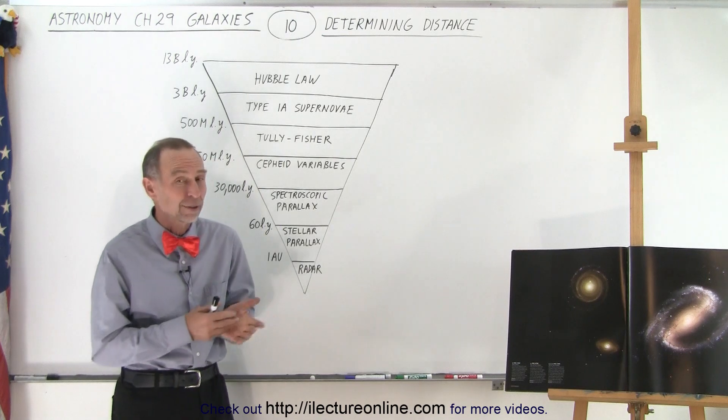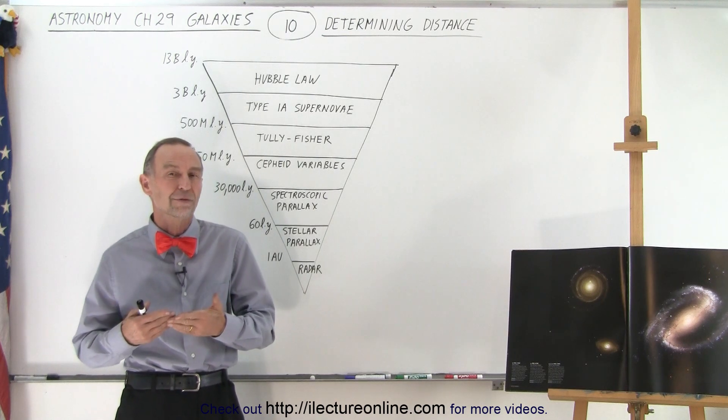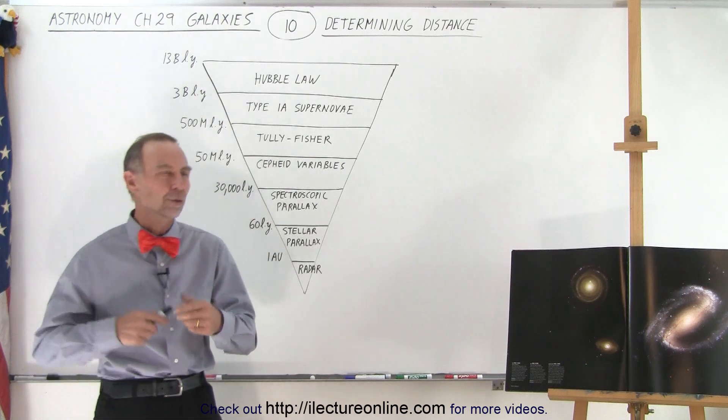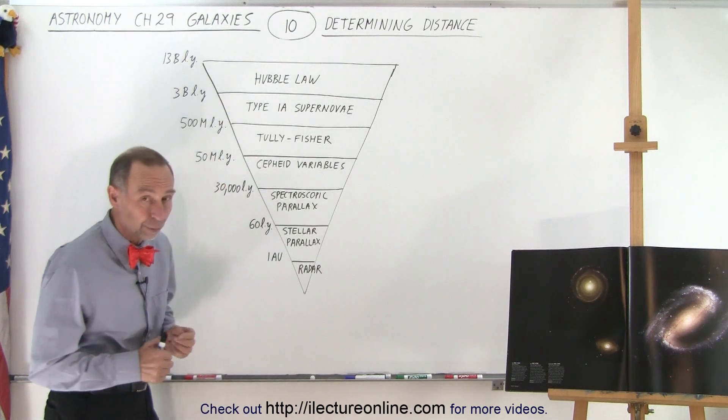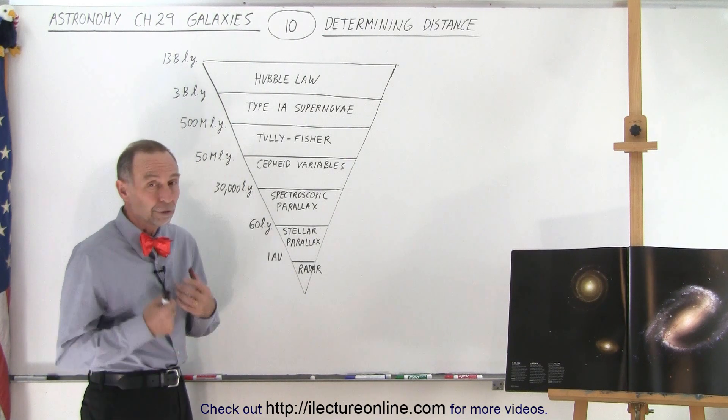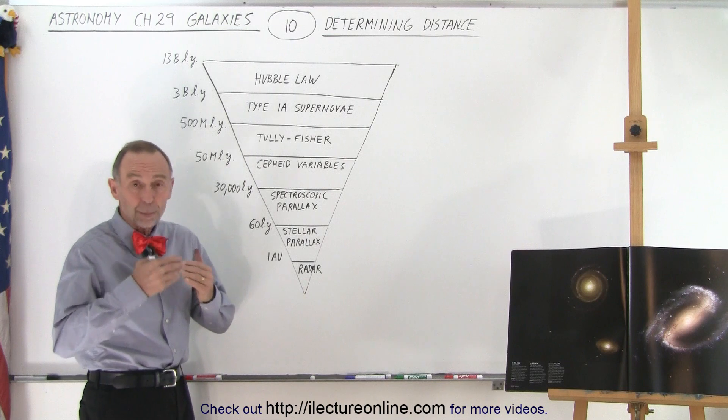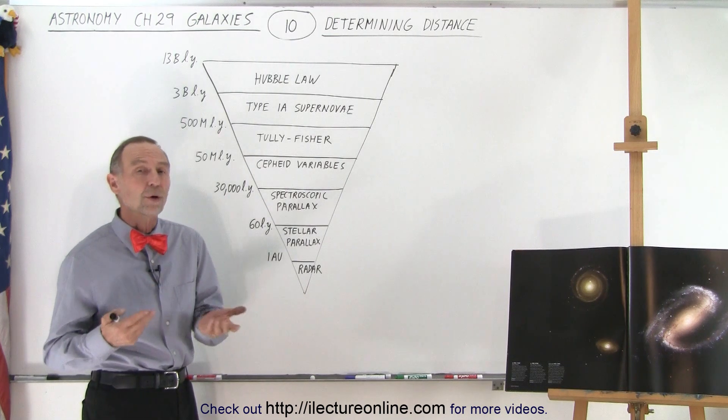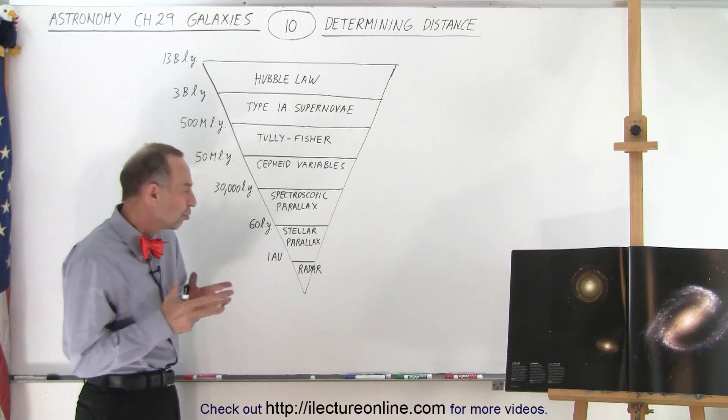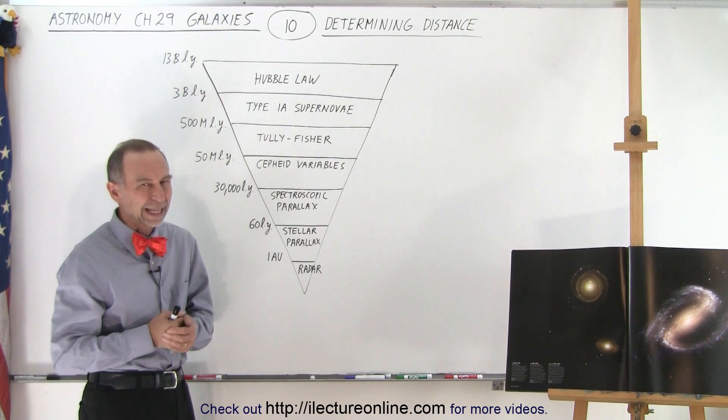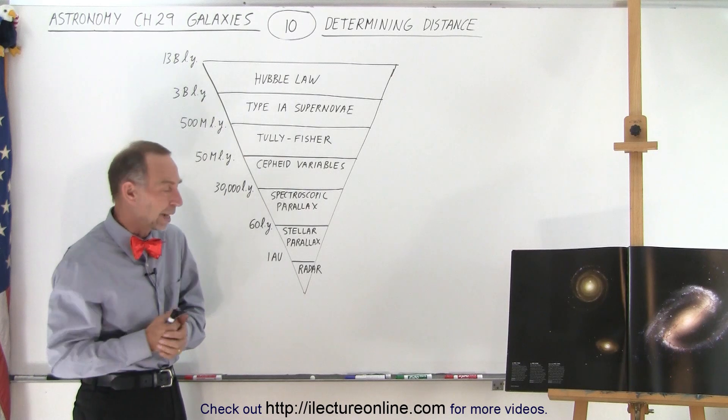Some of these methods on the board are not good for finding distances to galaxies because they're too far away, but let's go through all the various means by which we can determine distance. For example, we could use laser or radar to find distances between here and the moon or an asteroid. But those methods are usually limited to about one astronomical unit. Anything farther becomes impractical.